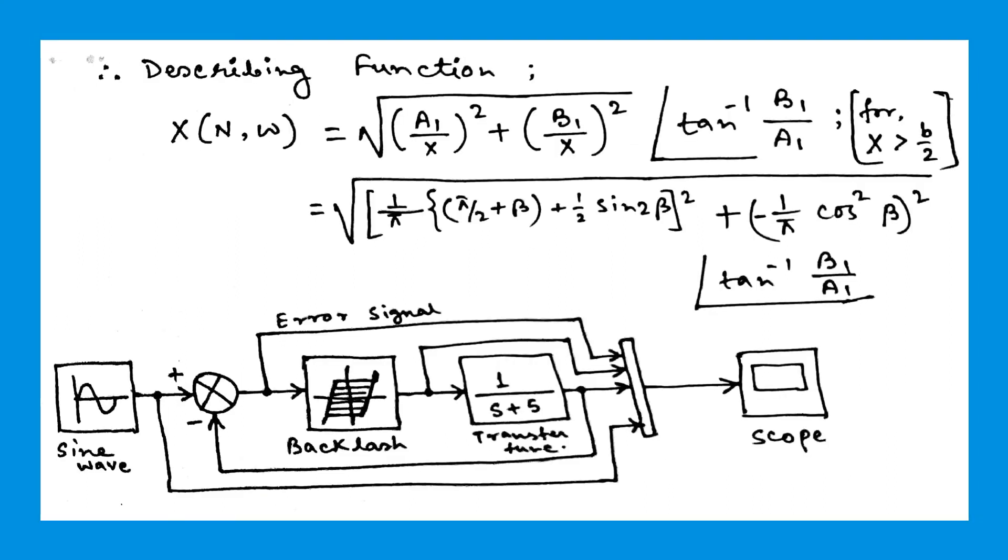So as we know that the describing function is output function by input function. So for this case we are getting the describing function X(N,ω) where N is the magnitude of the describing function and ω is the angle of that describing function.